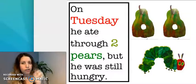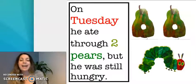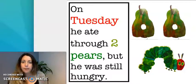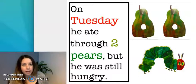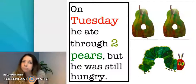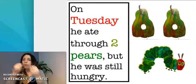On Tuesday, second day of the week, he ate through two pears. Two pears. But he was still hungry. So one apple, two pears, and hungry. Still, he wanted more food.